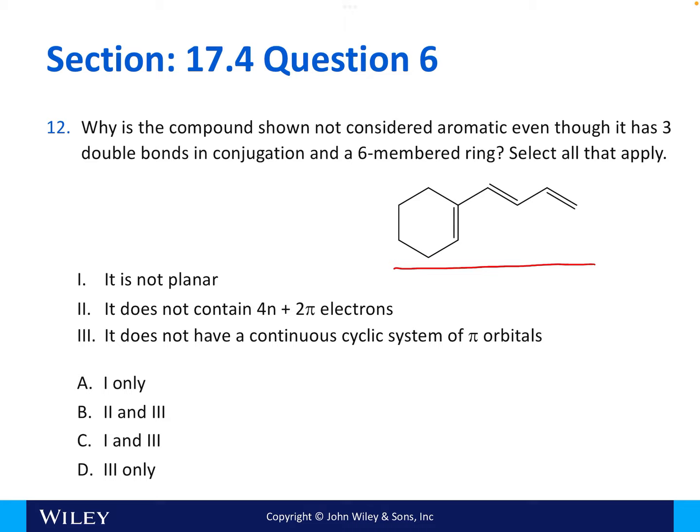It's asking why the structure on the slide here is not considered aromatic. It's most obvious to me that three is a reason why this structure can't be aromatic. It does not have a continuous cyclic system of pi orbitals. We only have one pi bond in the system. Now, if we look at two, it does in fact contain four n plus two pi electrons because it contains two, four, six electrons. So if n was equal to one, we have our six pi electrons to meet Huckel's rule. However, it is not going to be planar. This is effectively a cyclohexene ring, which can take on a chair conformer. And of course, chairs are not going to be planar. And so, the best answer is going to be C for one and three in the reasoning.